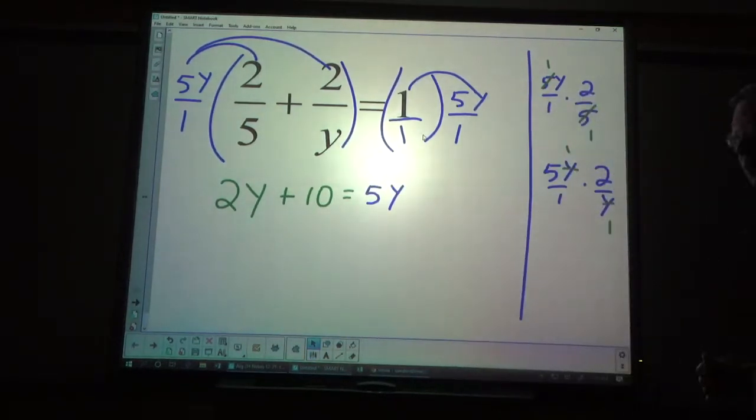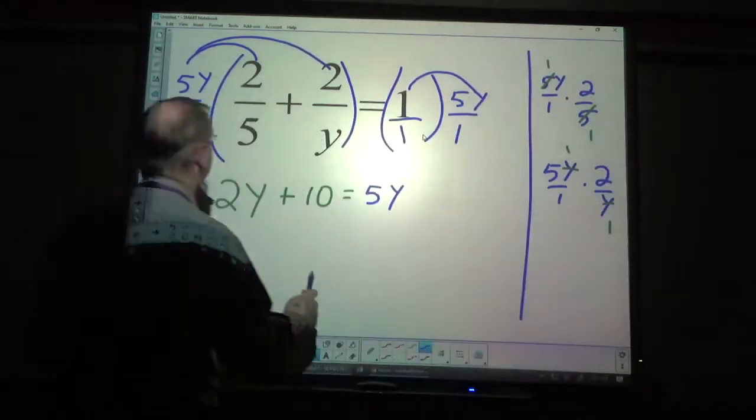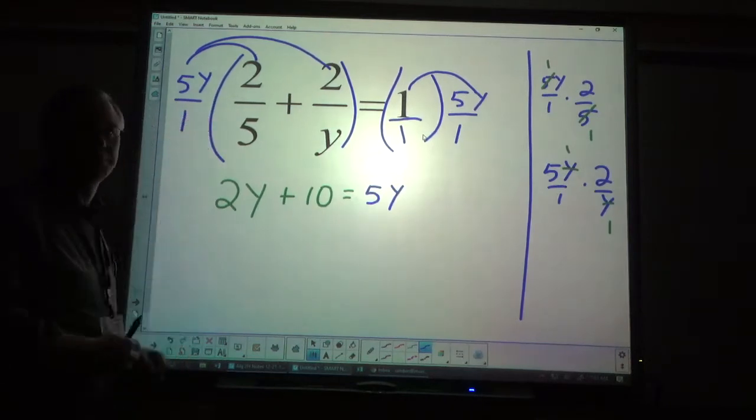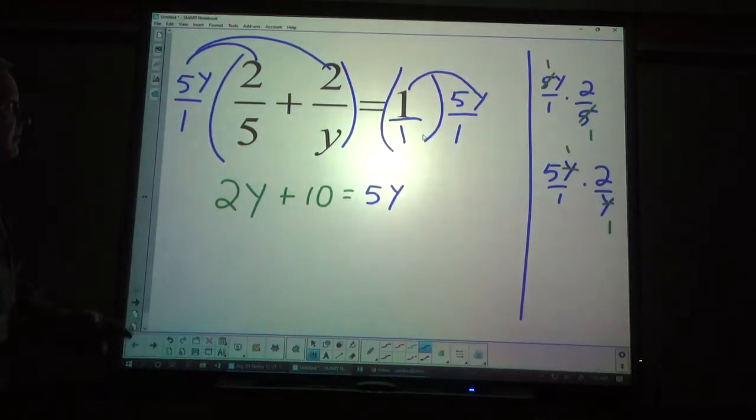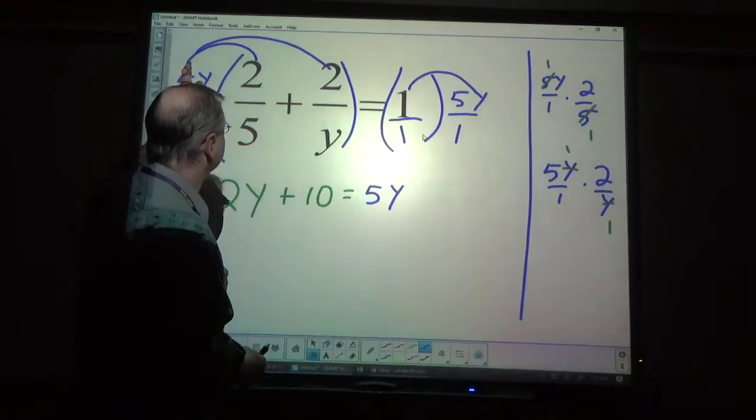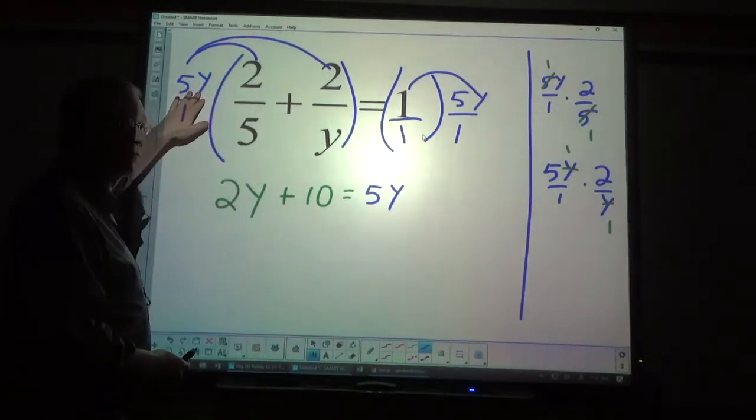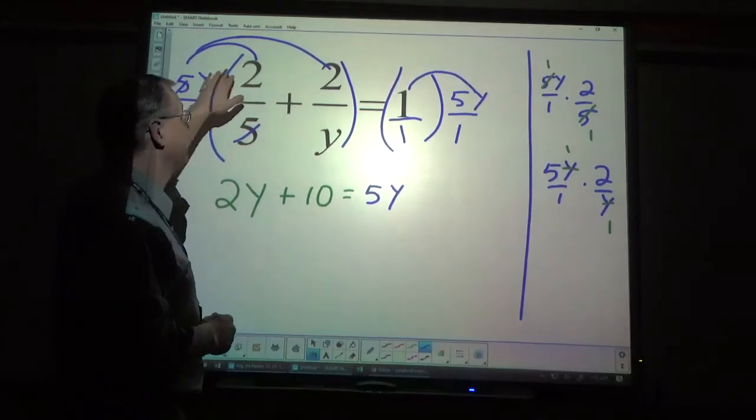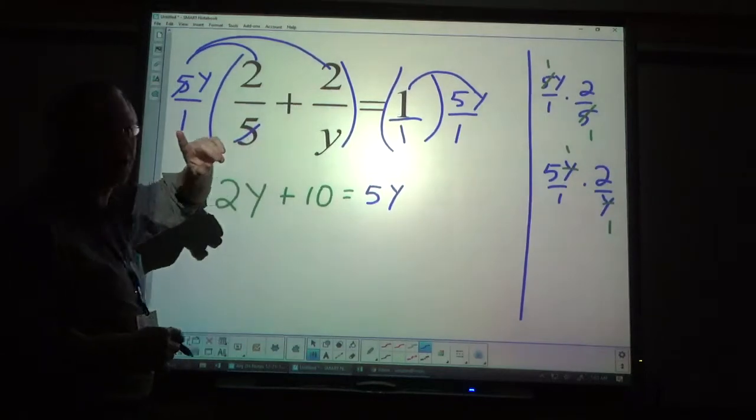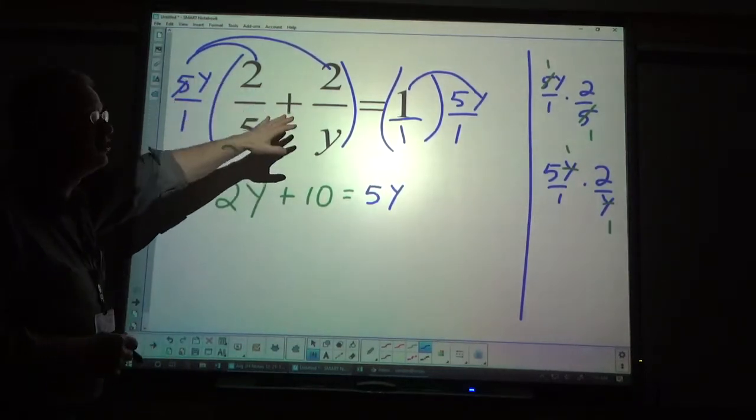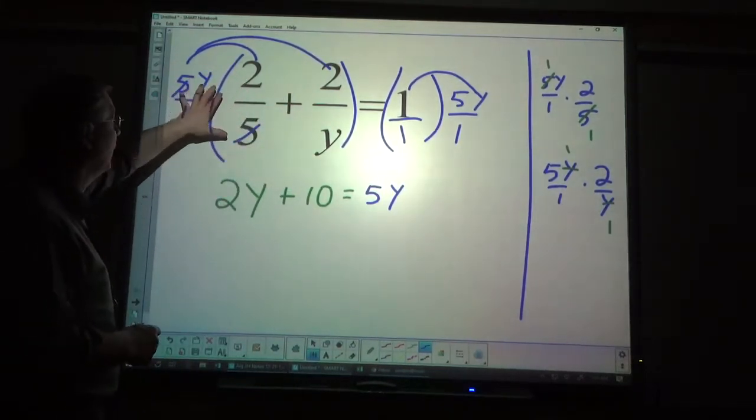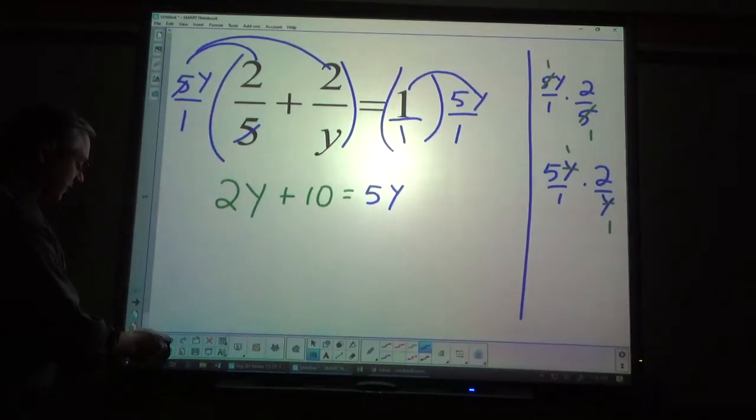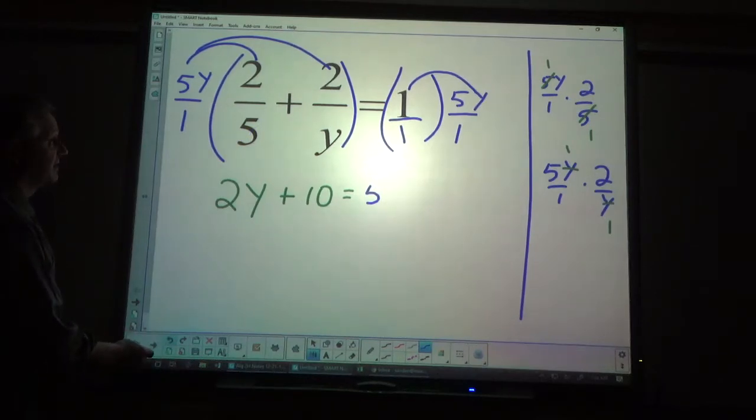Now, I can do that where it sits. When I distribute, the 5s cancel out. So, what's left is y and 2. But, what students often make a mistake with is then when they distribute to the next one, they don't distribute the whole 5y. They make a cross-off and then they think the 5y is not there for when you distribute here. Wrong. Each time, it's a new 5y that gets distributed.